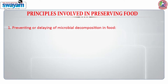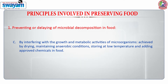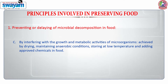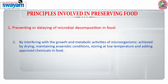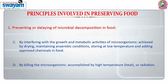Best suitable for fruits and vegetables, preservation can be achieved by interfering with the growth and metabolic activities of microorganisms. This can be accomplished by drying, maintaining anaerobic conditions, storing at low temperature, and adding approved chemicals to food. It can also be achieved by killing microorganisms, which is accomplished by high temperature, use of heat, or radiation.